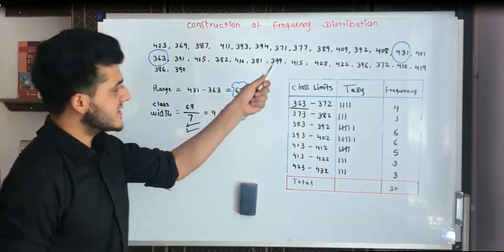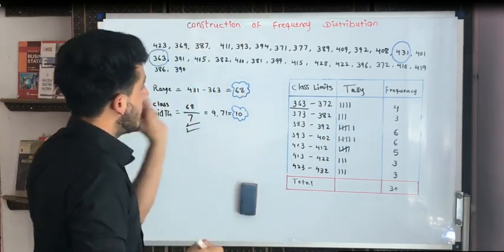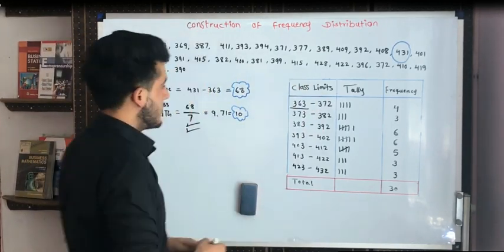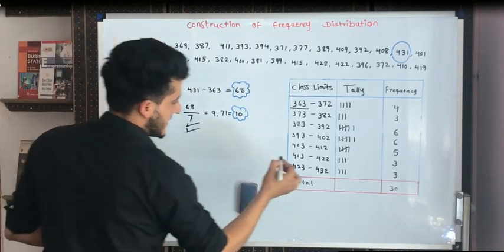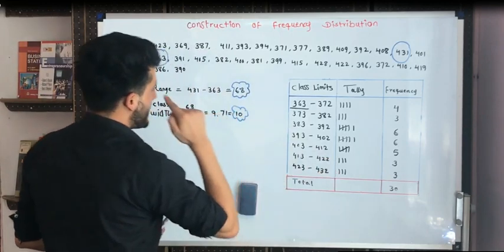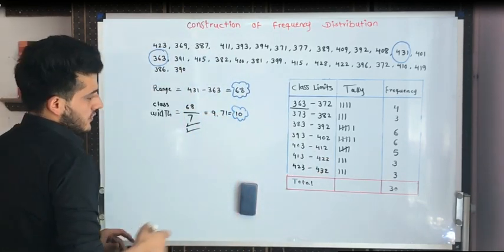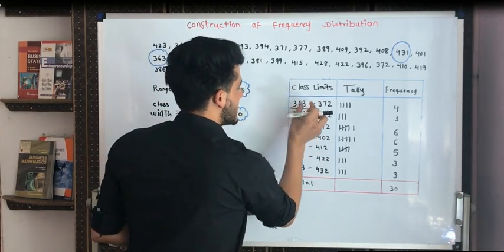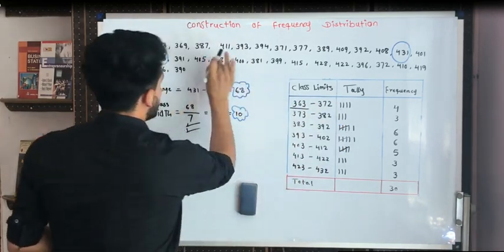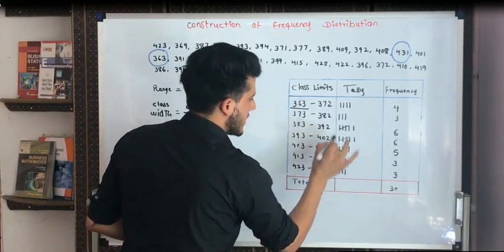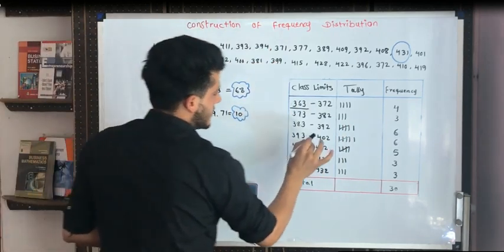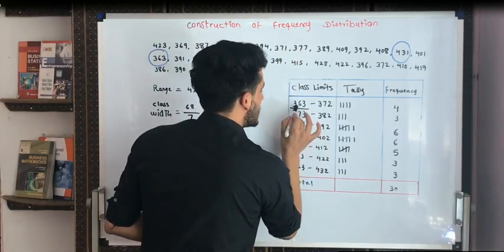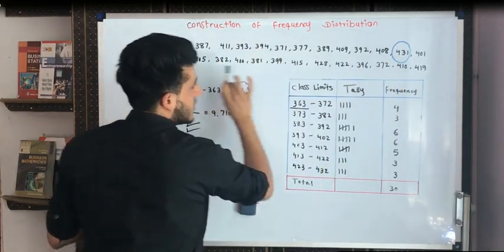Now, after this, this is the column of tally. What is tally? For every number we find from this ungrouped data, we put one tally mark. Suppose we found 423 — 423 is in this class, so we put one tally. The next one is 369 — 369 is in the class 363 to 372, so we put one tally there. Then 387 is in its interval, so we put one there. 393 is in the fourth interval, and we put one line. 371 is between 363 to 372. Continuously we complete all the numbers this way.